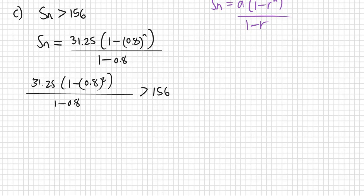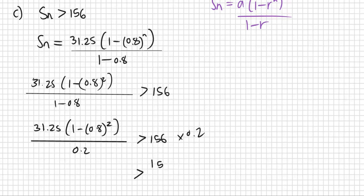Let's see what happens. First thing I would do is work through this slowly. We have 31.25 times 1 minus 0.8 to power of n, divided by 0.2. So we times both sides by 0.2 and get 156 times 0.2, which is 156 over 5.